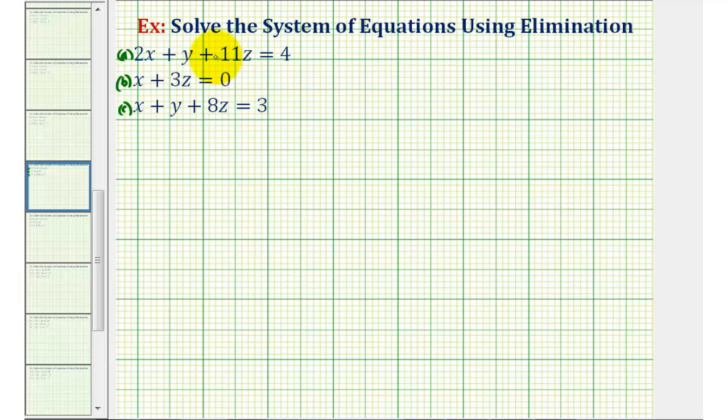Normally when solving a system of three equations with three unknowns, we can select any two equations to eliminate either the X, Y, or Z terms. But in this case,